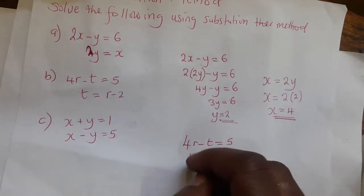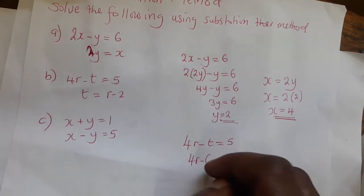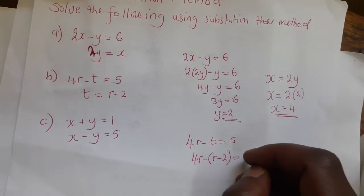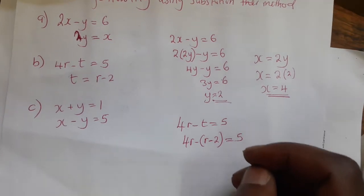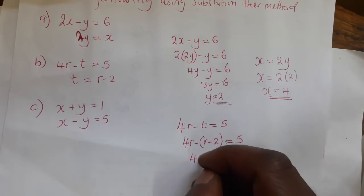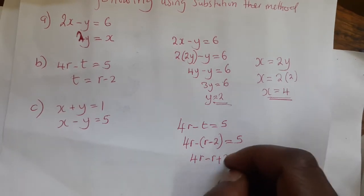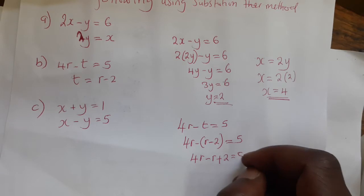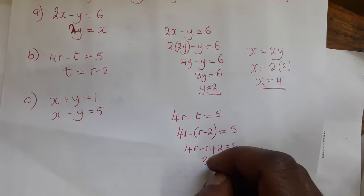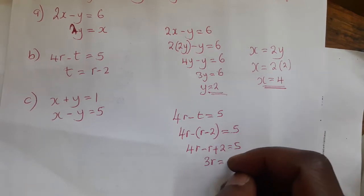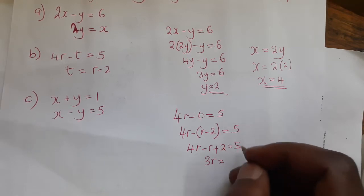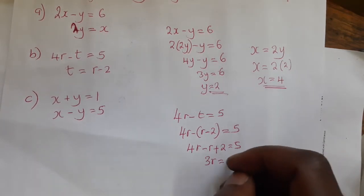Where t appears, we put r minus 2. So we say 4r minus (r minus 2) equals 5. Please don't make a mistake here — you need to distribute the minus sign, so it becomes 4r minus r plus 2 equals 5.